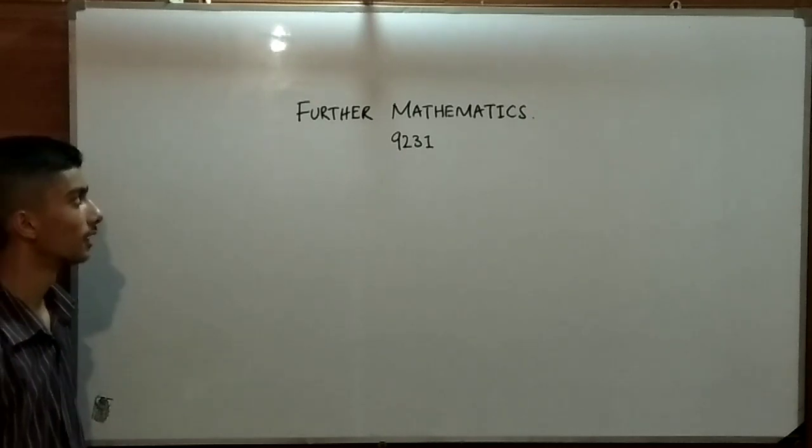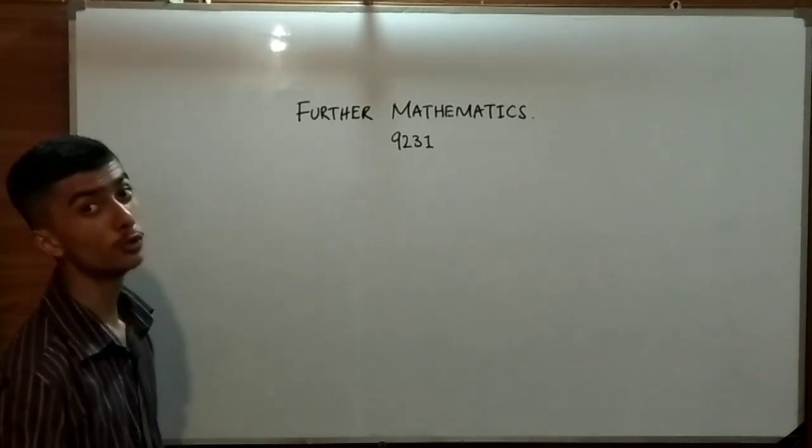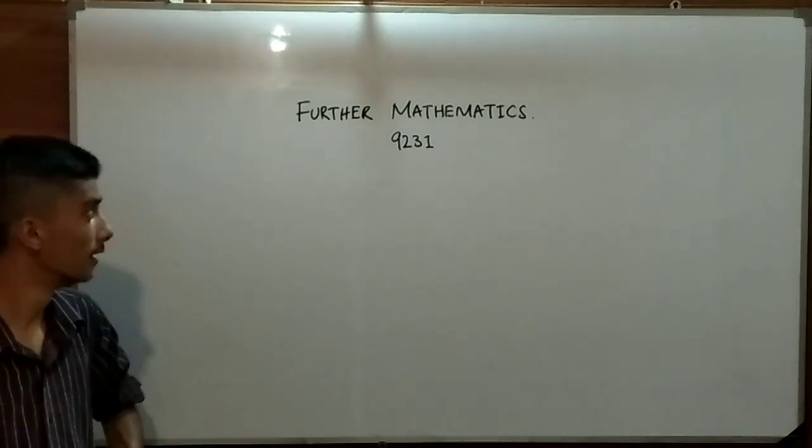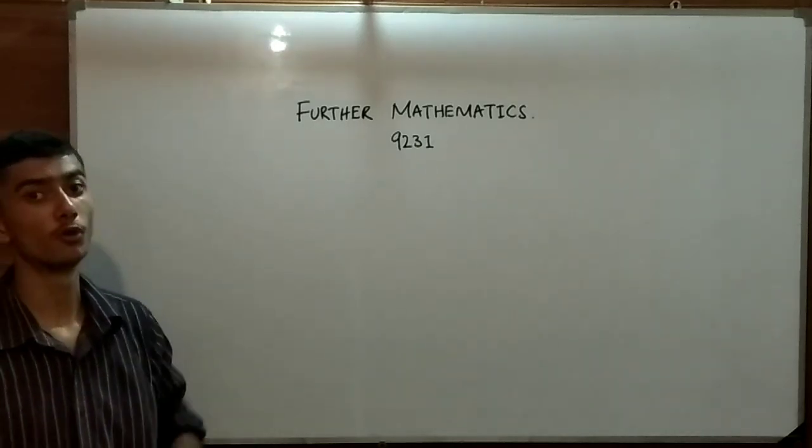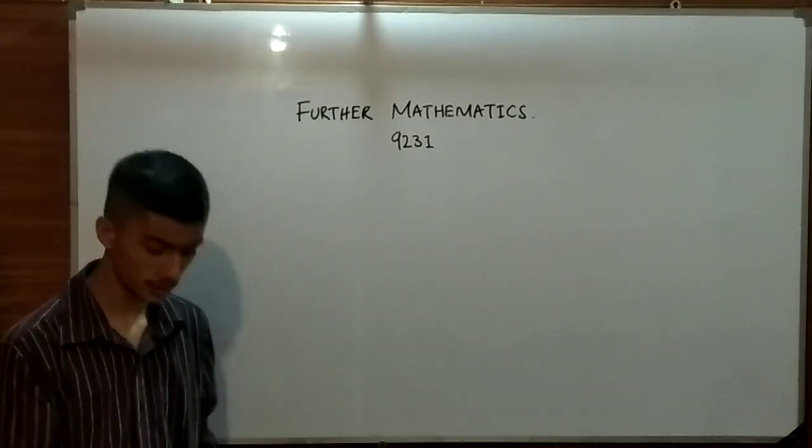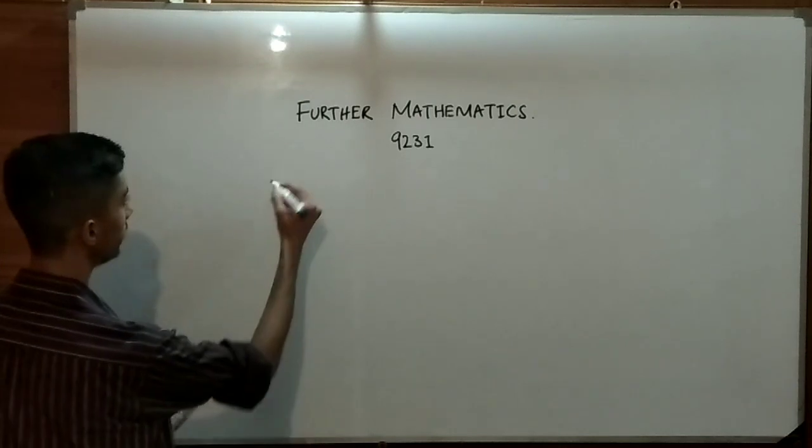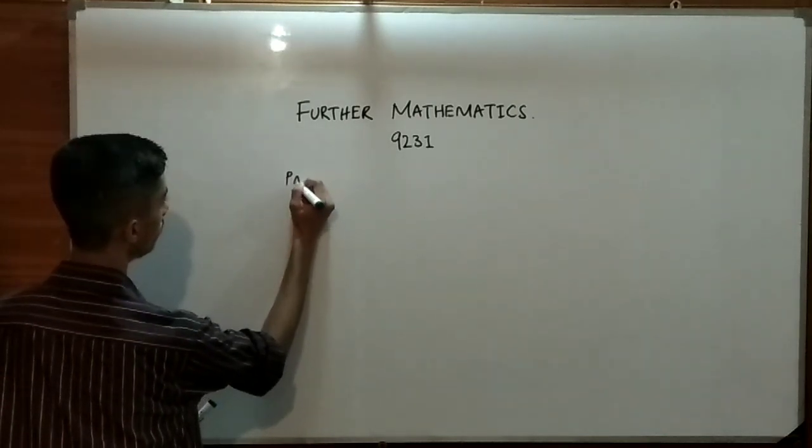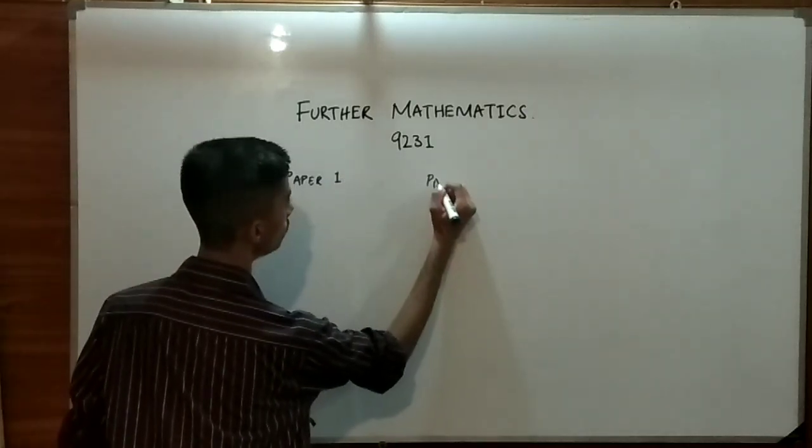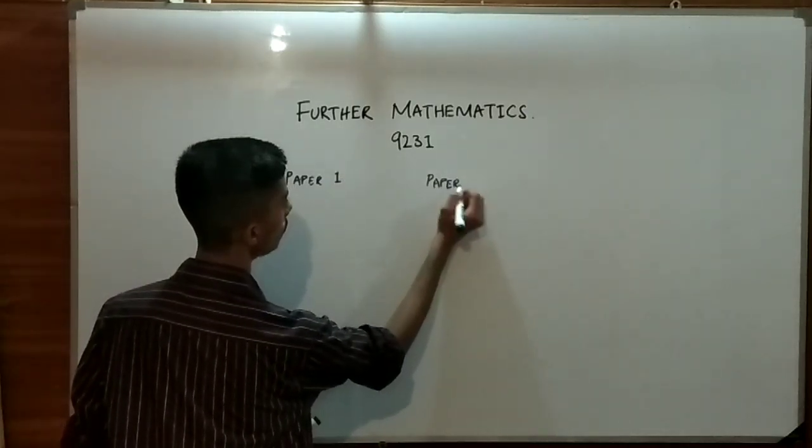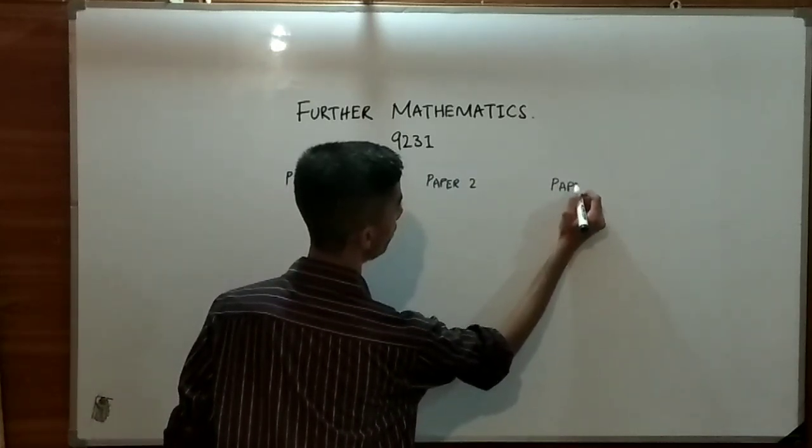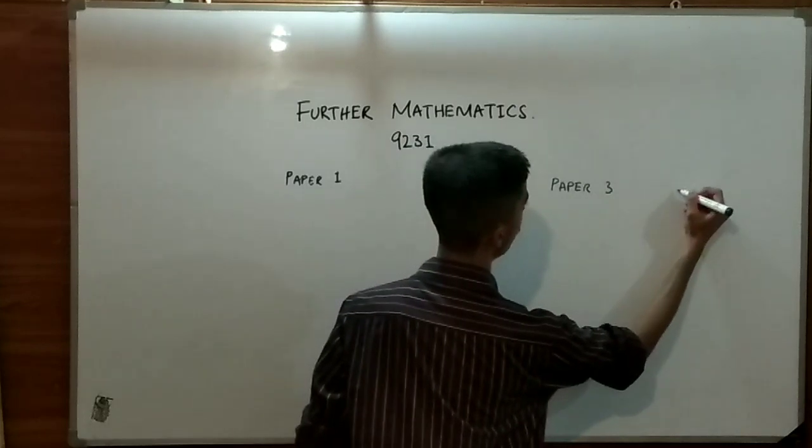From new paper pattern of further mathematics 9231, the paper is divided into four components. First of all it was of two components and now it has been divided into four components: paper 1, paper 2, paper 3 and in the end paper 4.